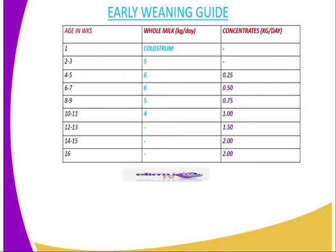In weeks two to three, you feed on whole milk. On weeks four to five, you are supposed to gradually introduce concentrate. You can see that in weeks four to five, there is 0.25 kg of concentrate introduced. In week seven, the portion of concentrate has been increased by an extra 0.25, making the total 0.5 kg per day. The amount of whole milk to provide is six kg per day.